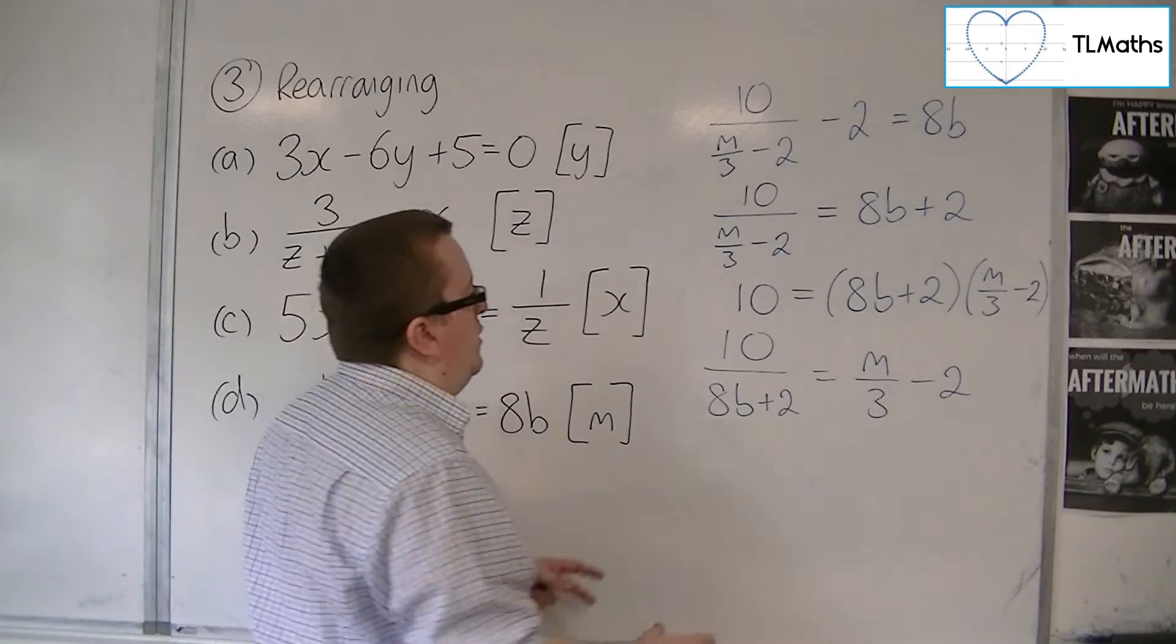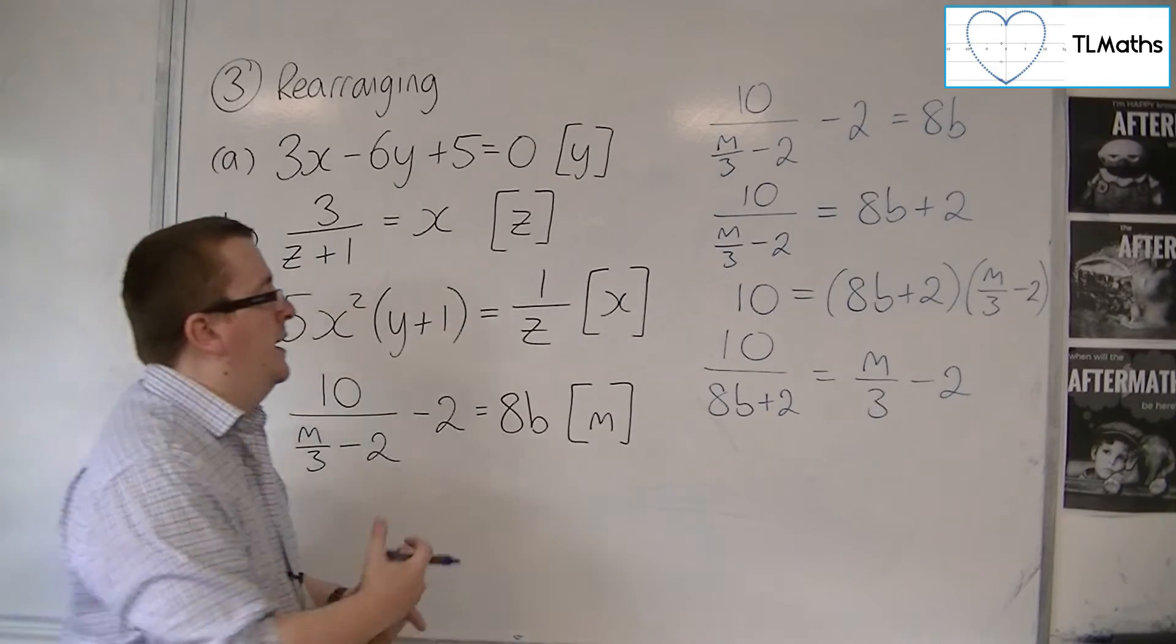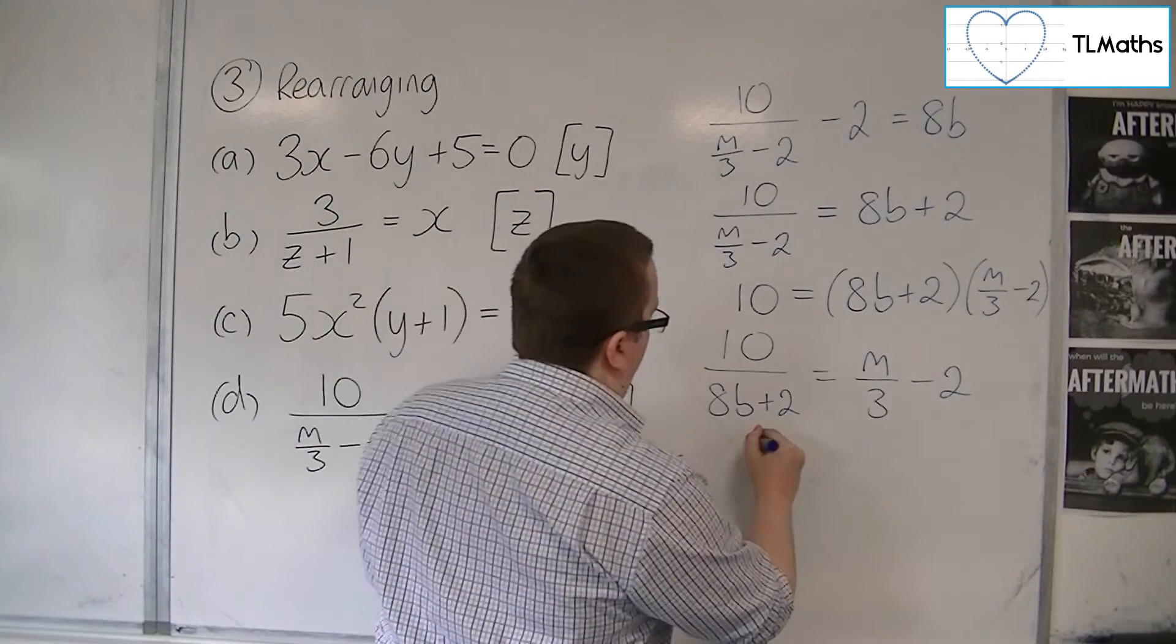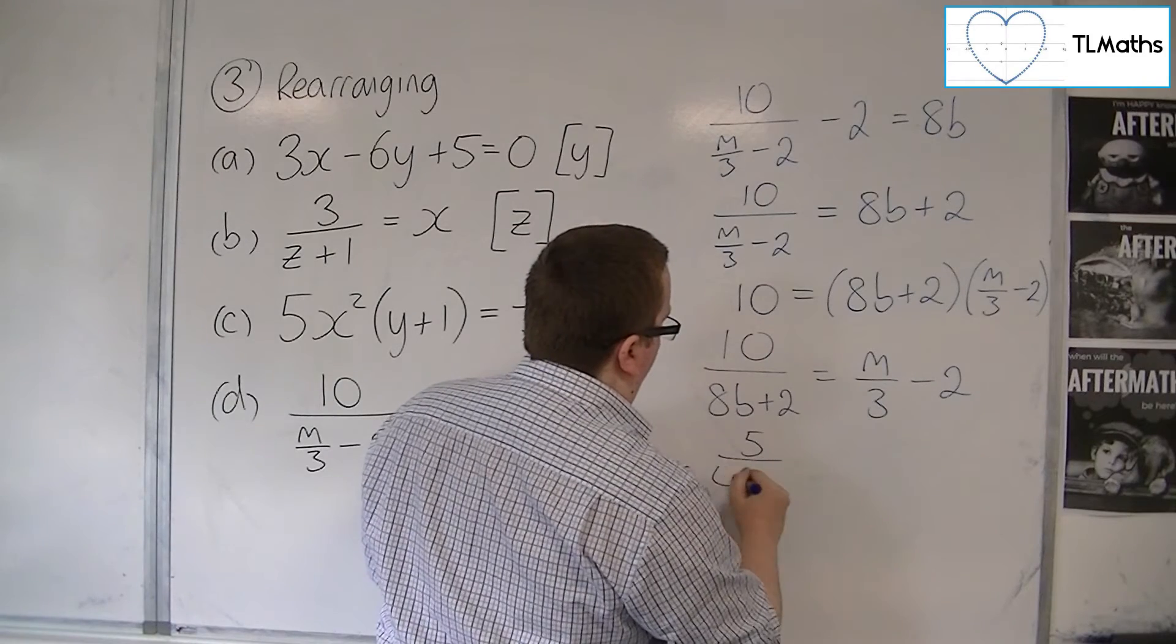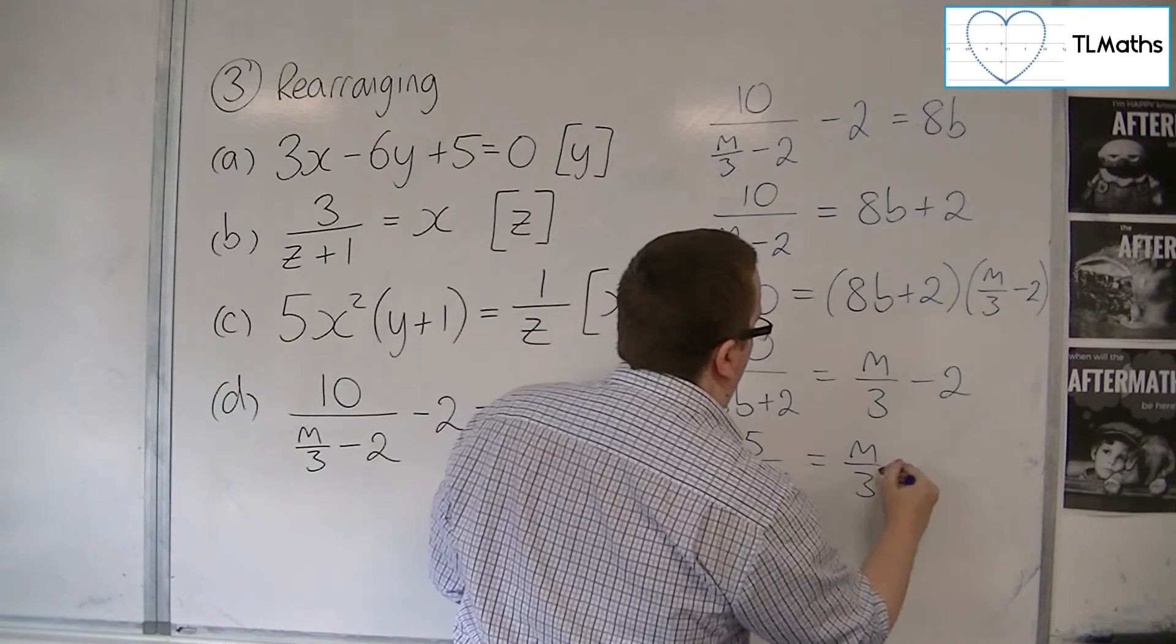Now, at this stage, you might be thinking, well, can I simplify that fraction? Well, yes, you can. So I could divide top and bottom by 2 and I get 5 is equal to 4B plus 1. So that simplifies that fraction.